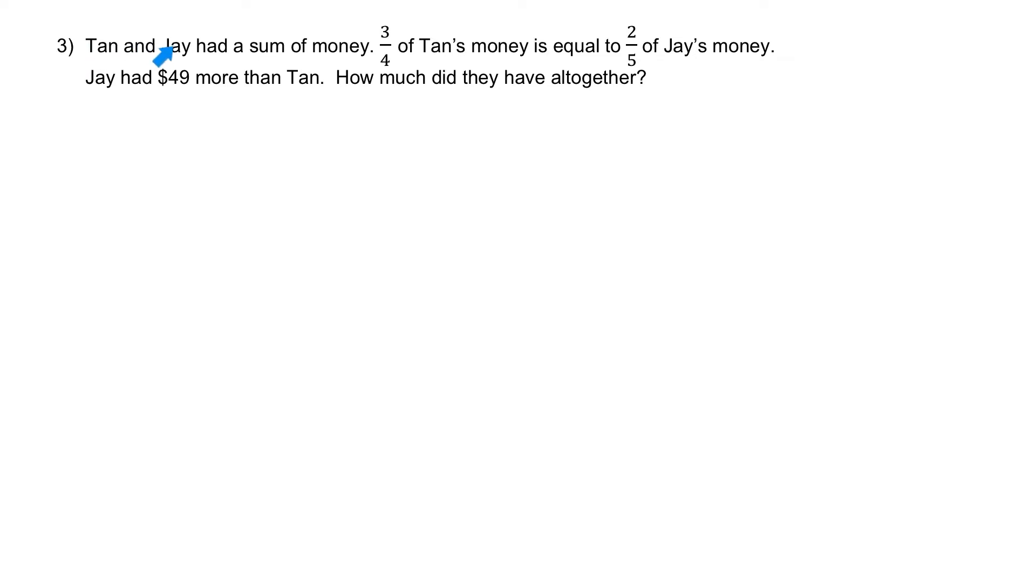Question 3: Tan and Jay had a sum of money. Three-quarter of Tan's money is equal to two-fifth of Jay's money. Jay had $49 more than Tan. How much did they have all together?